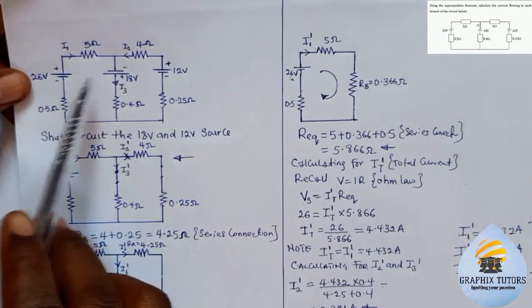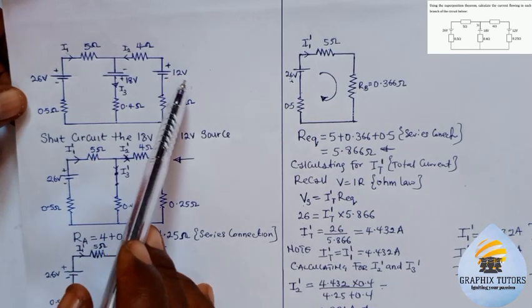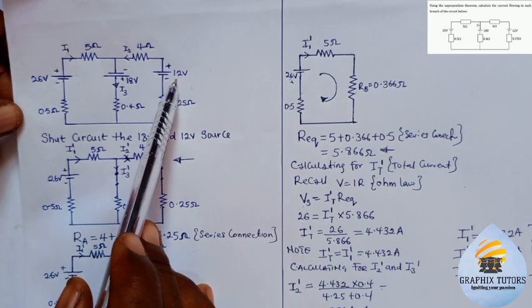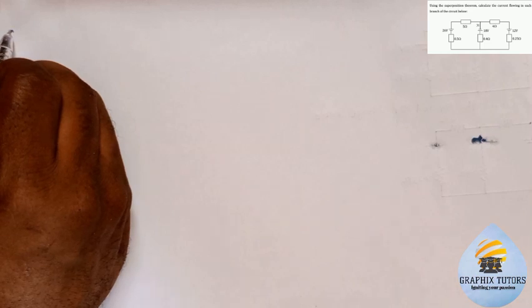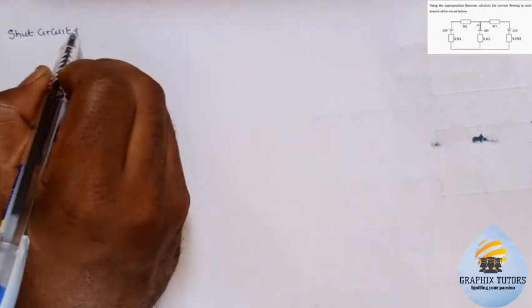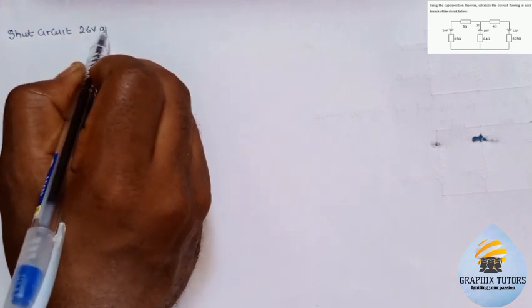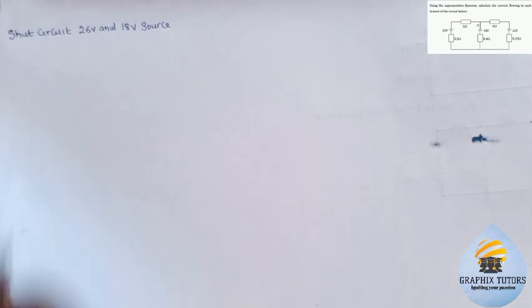We have finished short-circuiting the first set — leaving 26 volts in operation while short-circuiting 18 volts and 12 volts. Now we move to the second step: short circuit the 26 volt source and the 18 volt source and leave only the 12 volt source in operation.